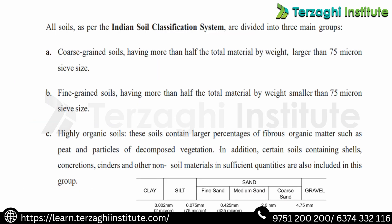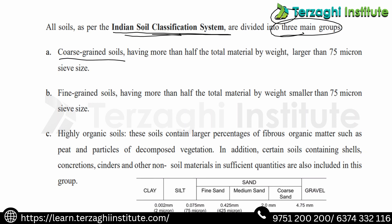The next basic topic is ISCS classification — classification of soil at diploma level. In ISCS classification there are three types: coarse-grained soil, fine-grained soil, and highly organic soil.